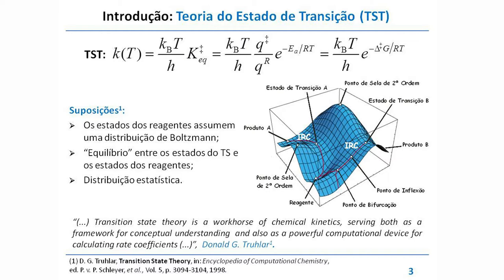Nesse exemplo, temos dois estados de transição: um que conecta o reagente ao produto A e outro que conecta ao produto B. Para saber que conecta, vem outro conceito importante: a coordenada intrínseca de reação, ou IRC (do inglês), em que basicamente partimos da geometria do estado de transição e fazemos deslocamentos ao longo desse vetor normal, que caracteriza essa coordenada de reação.